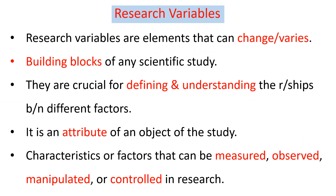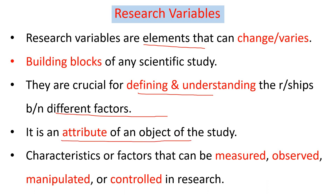Before explaining each type of research variable, let's define what research variables are in general. Research variables are elements that can change or vary. They are the building blocks of any scientific study or research, and are crucial for defining and understanding the relationship between different factors. A research variable is an attribute of an object of study — the characteristics or factors that can be measured, observed, manipulated, or controlled in a research.